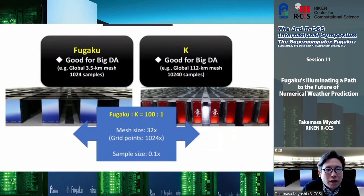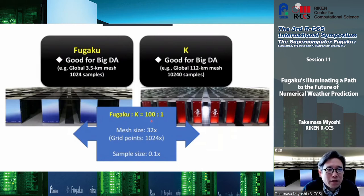We now have Fugaku. The K computer was good for big data assimilation, but Fugaku is basically a hundred times more powerful, so we are thinking about how to use this computing power to improve our prediction in big data assimilation.